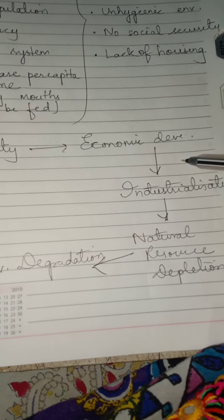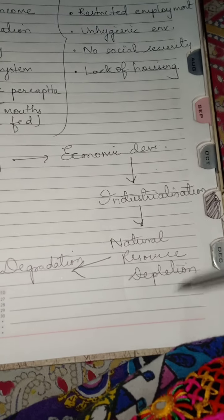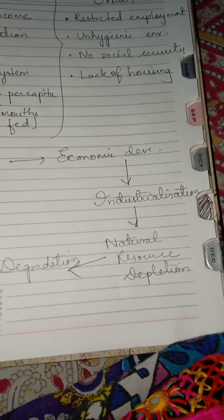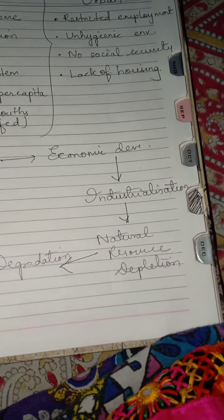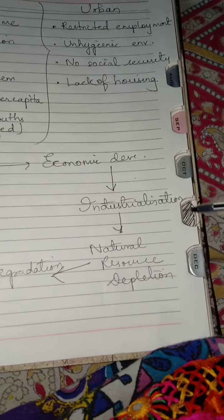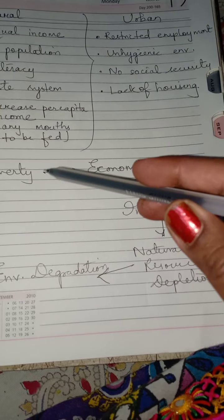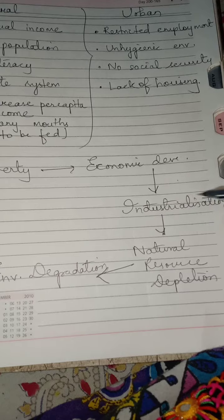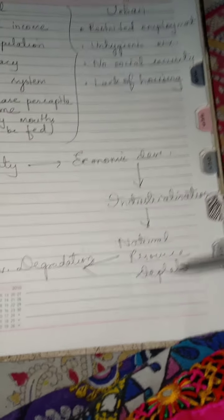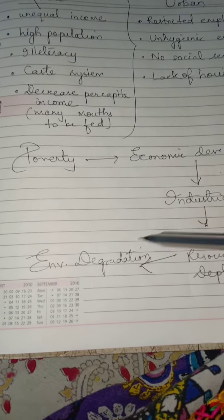When industries are set up, they need more workers, including people from villages who will work hard and produce more products for economic development. As more industries are established, this causes natural resource depletion, and ultimately leads to environmental degradation. So poverty requires economic development, which requires industrialization, which causes natural resource depletion, which causes environmental degradation.